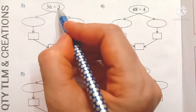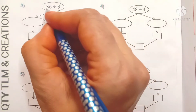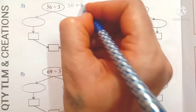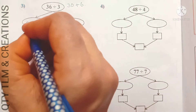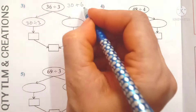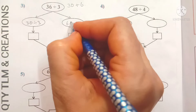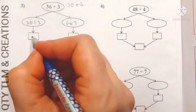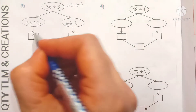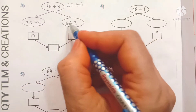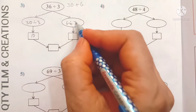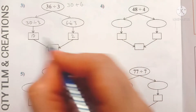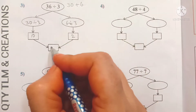Next: 36 divided by 3. The expanded form of 36 equals 30 plus 6. So 30 divided by 3 and 6 divided by 3. 3 divides 30 for 10 times — 3 tens are 30. And 3 divides 6 for 2 times — 3 twos are 6. We add 10 plus 2 and we get 12.